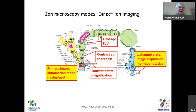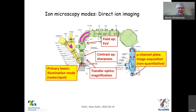Now, there are two basic ion imaging modes in the Cameca instruments. The first is what we call direct ion imaging. What direct ion imaging involves is that we transport an image from the sample — which we've illuminated with a primary beam in either raster or spot mode of a certain size — through the entire instrument and remake the image on some kind of position-sensitive detector. In this mode, the primary beam can be any size, and it's really the detector that determines the resolution — the size of the pixel, for example, on the micro channel plate. But the micro channel plate is actually non-quantitative.